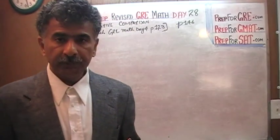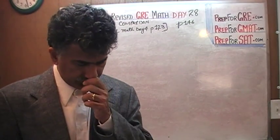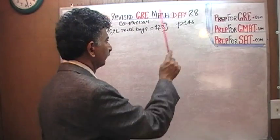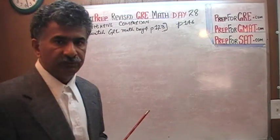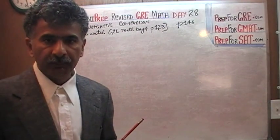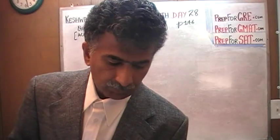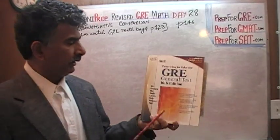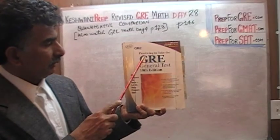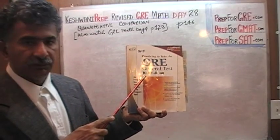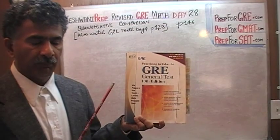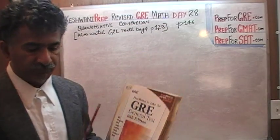The problem that we are about to solve is on page 146. This is a very similar problem to one that appeared in the old version of the exam — practicing to take the GRE, the 10th edition. In that book, a similar problem appeared, and I am going to do that problem first, and then we are going to do the one in front of us.